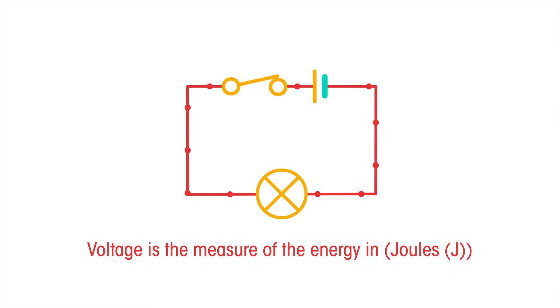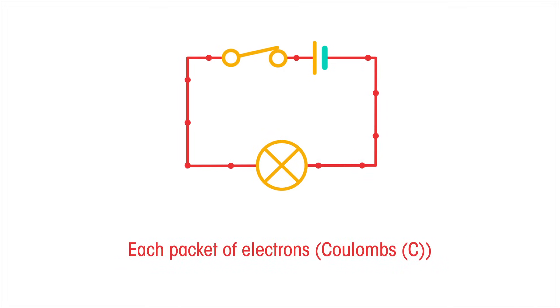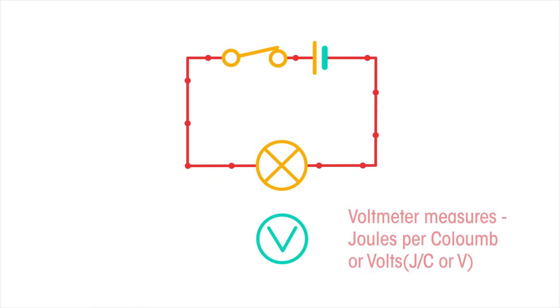So the voltmeter measures joules per coulomb, or volts. Voltmeters are always connected in parallel when added to a circuit. In this diagram, the voltmeter is measuring the voltage across the lamp.